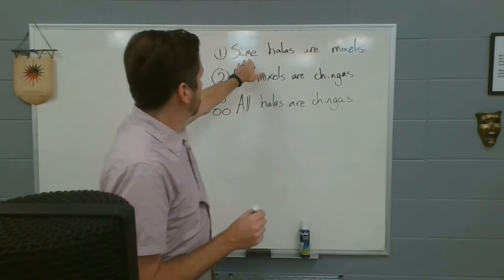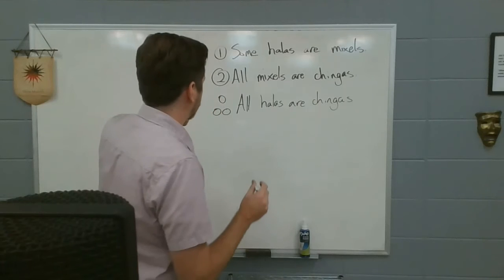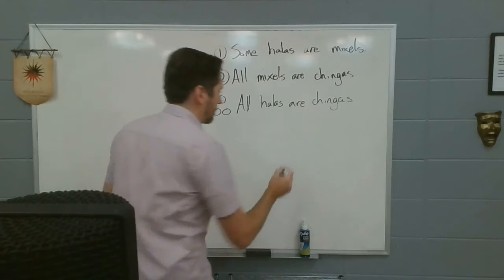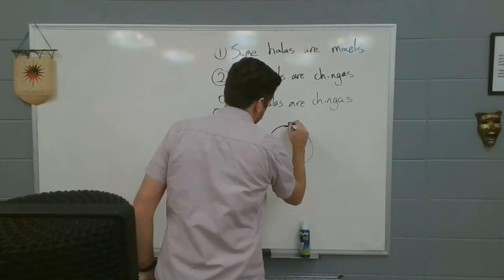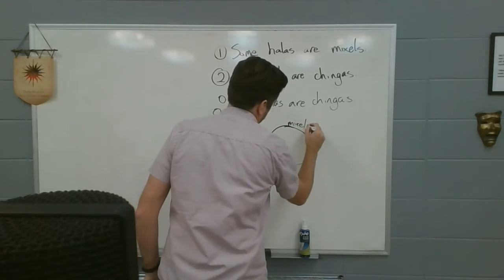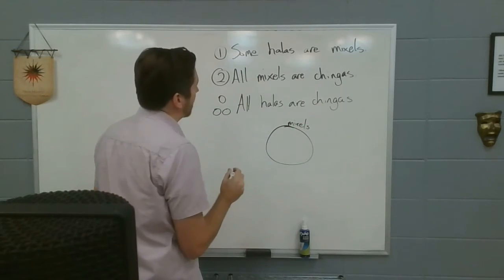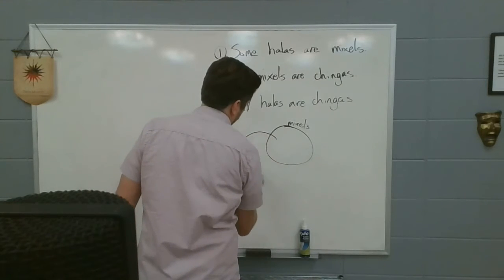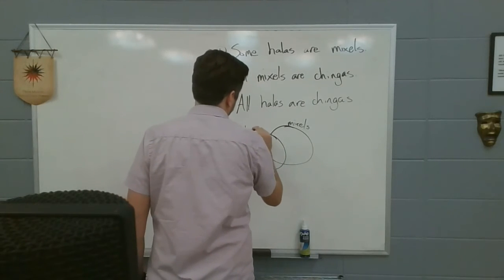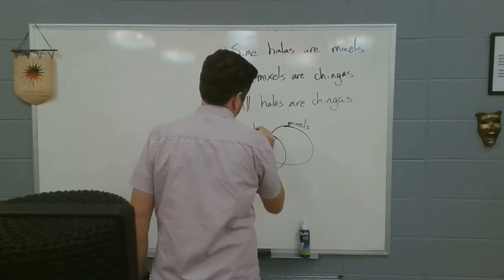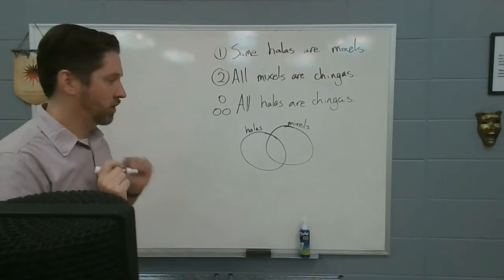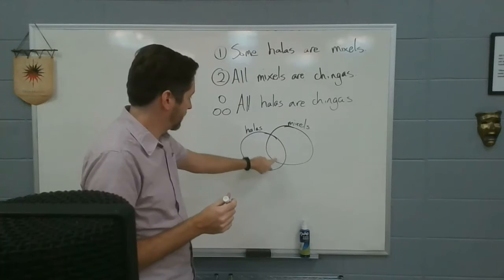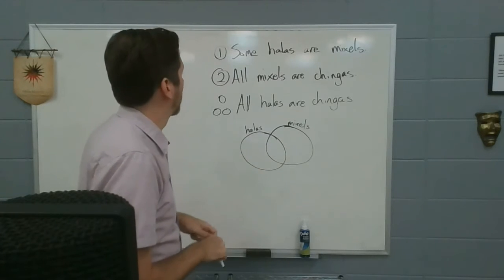So I'm going to draw the first one. Some hollas are mixels. So this is like the dog thing, isn't it? Here's my mixels. And only some hollas are mixels. So there's my hollas. Good. Some hollas are mixels. Not all of them. These are the hollas that are mixels. These are the non-mixel hollas.